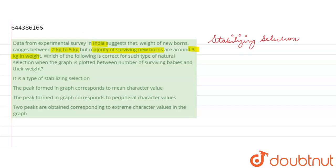They have given us in the question that the children that are born in this population usually weigh from 2 kg to 5 kg. But the surviving population of the newborns mostly weigh 3 kg. So this is the average value.